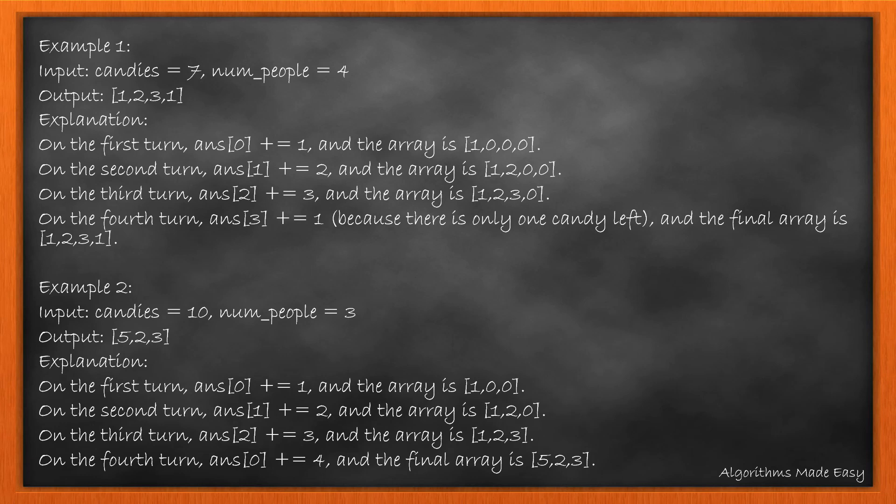Here are two examples. For the first one, we have 4 people and 7 candies. We give 1 candy to the 1st person, 2 to the 2nd,